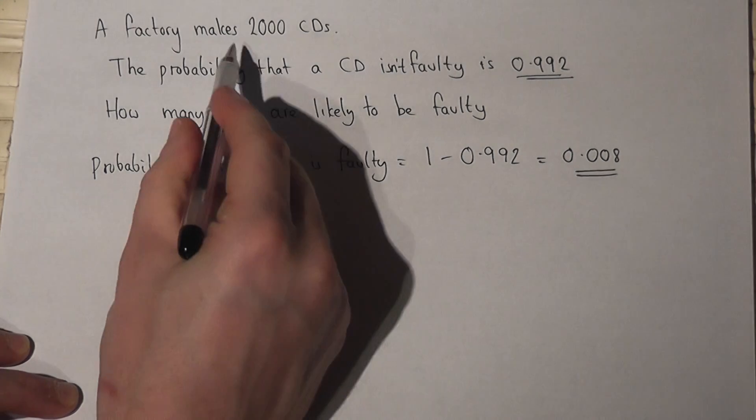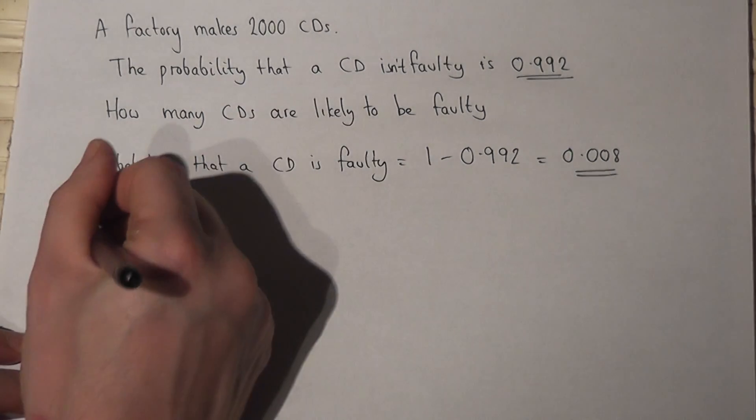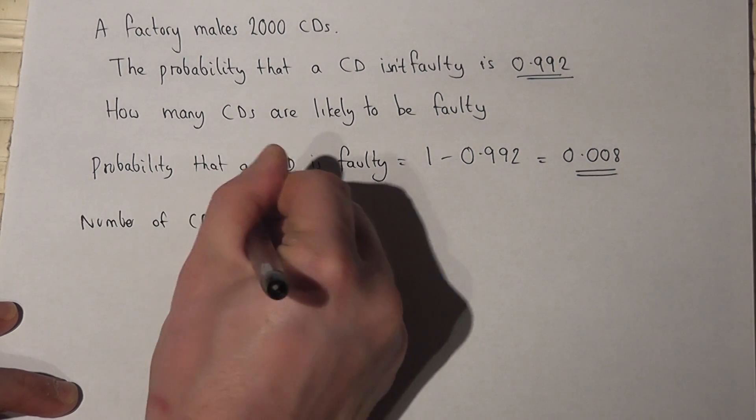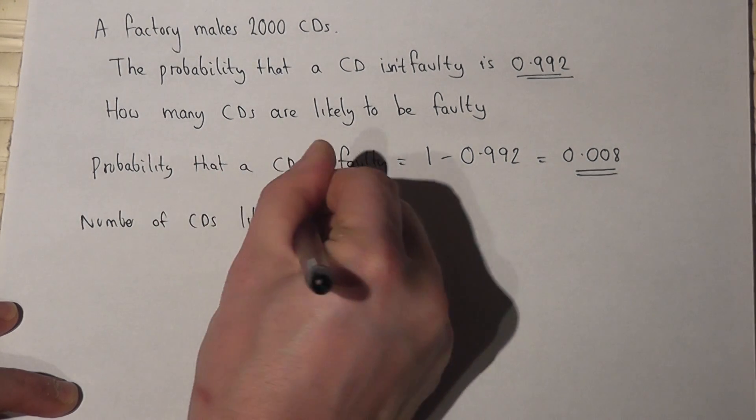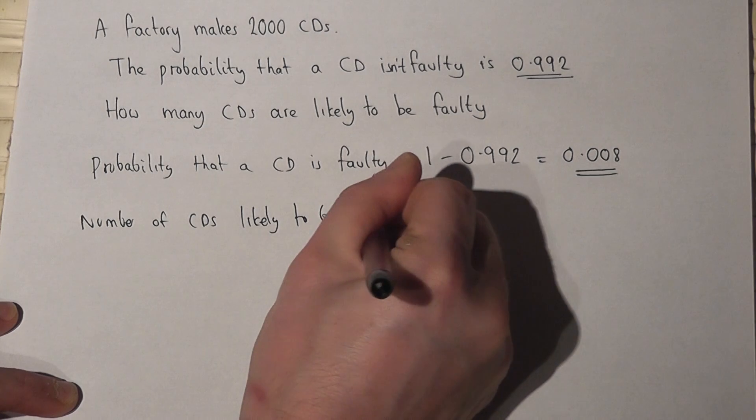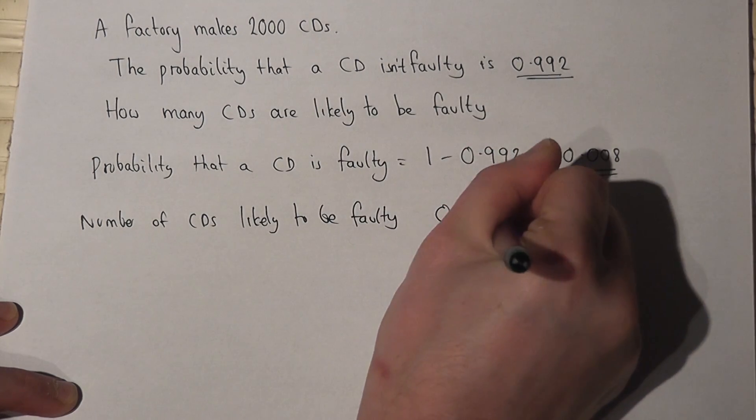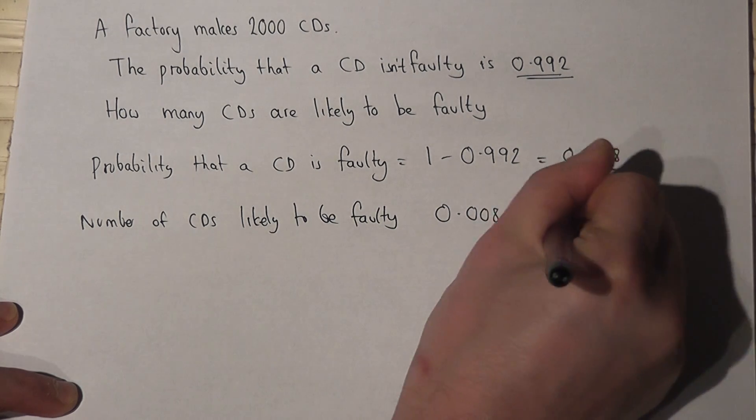So if they make 2000 CDs, then the number of CDs which are likely to be faulty is quite simply 0.008 times 2000.